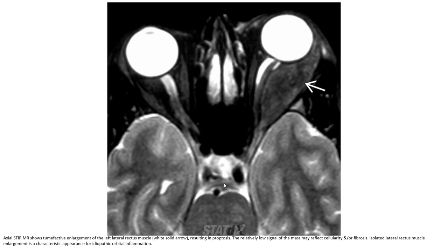This is the axial post-contrast MRI showing tumor-like enlargement of the lateral rectus muscle, resulting in fibrosis. The relative low signal of the mass may reflect cellularity and fibrosis. Isolated lateral rectus muscle enlargement is a characteristic finding of idiopathic orbital inflammation.